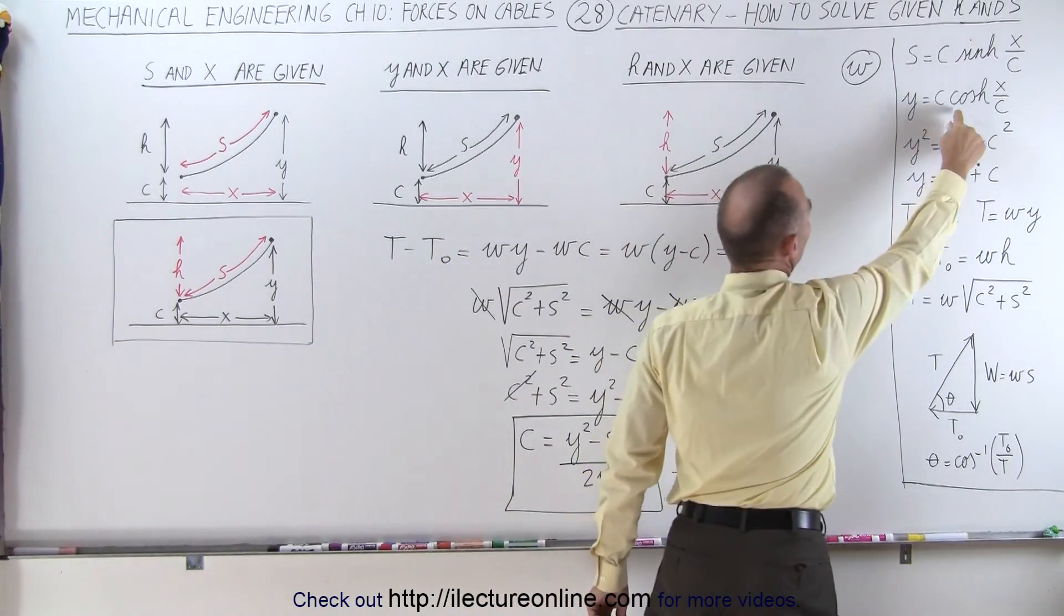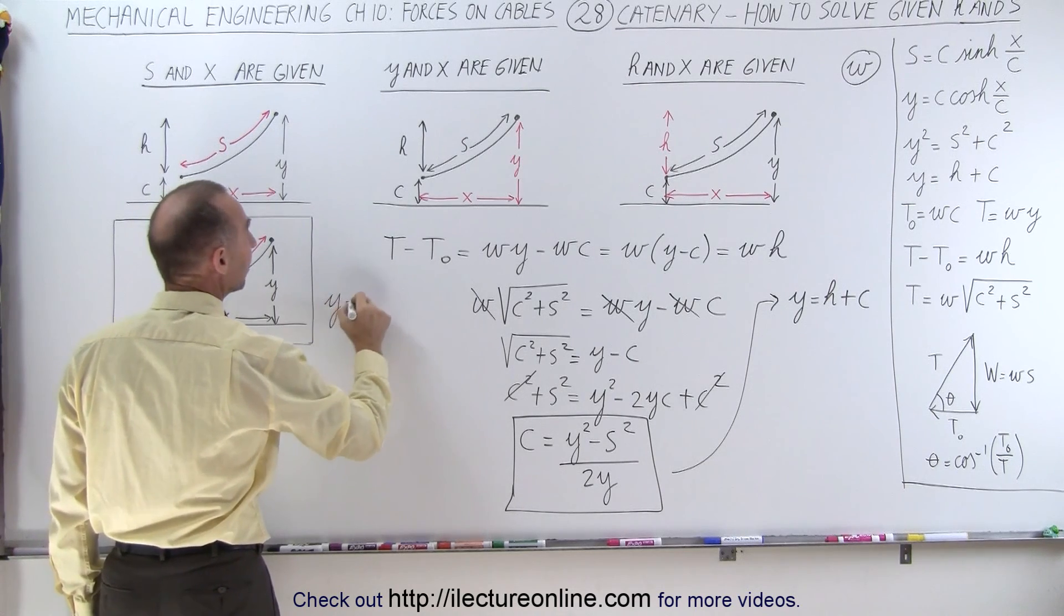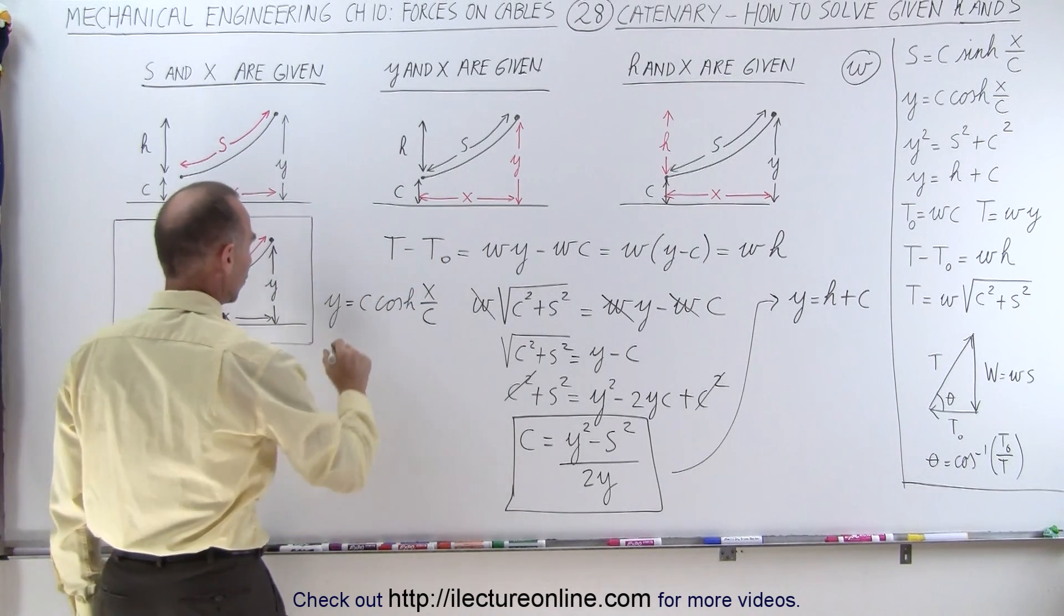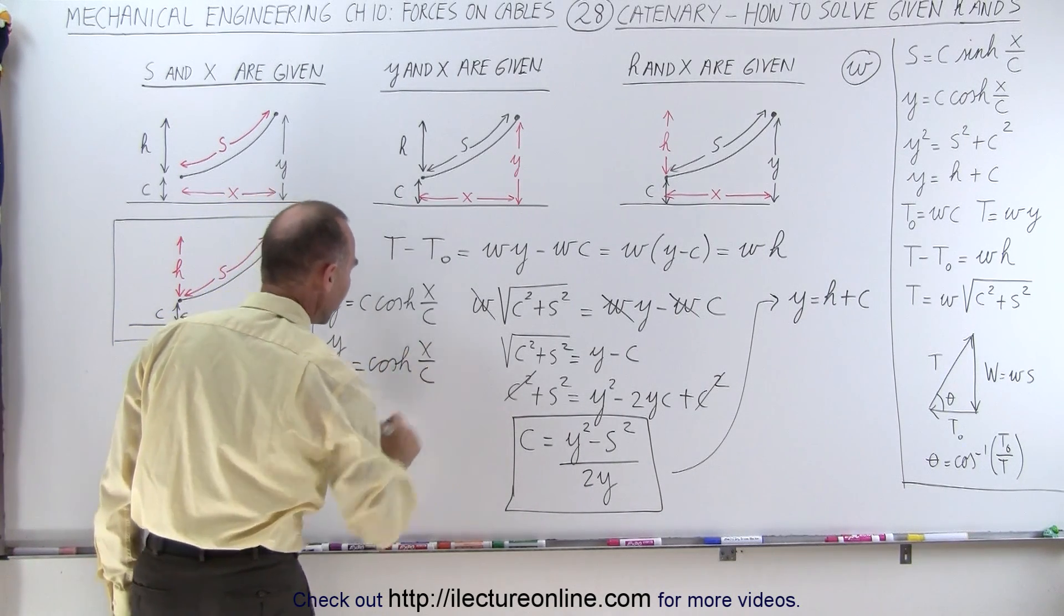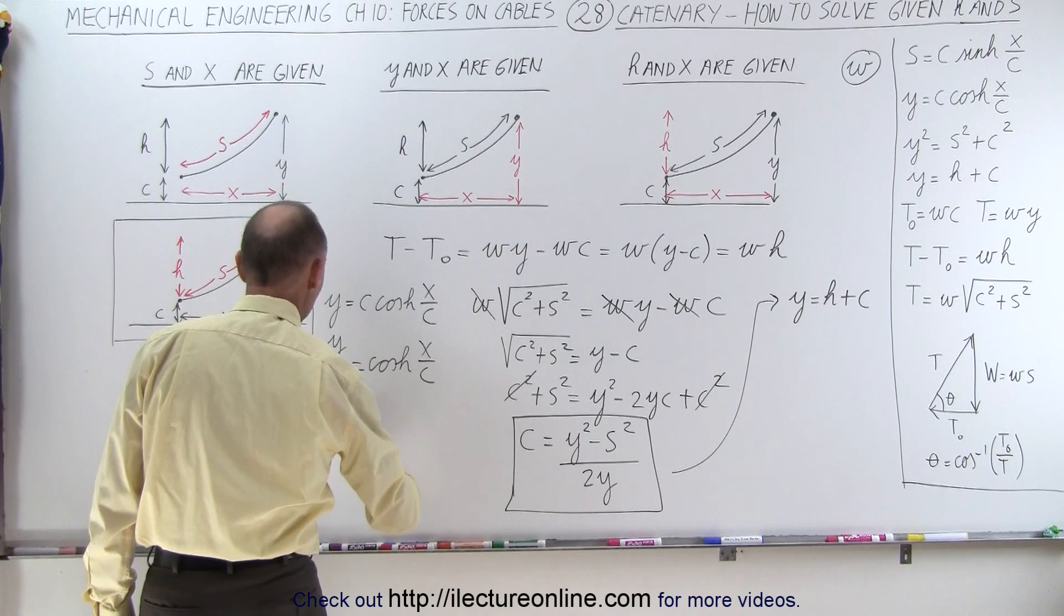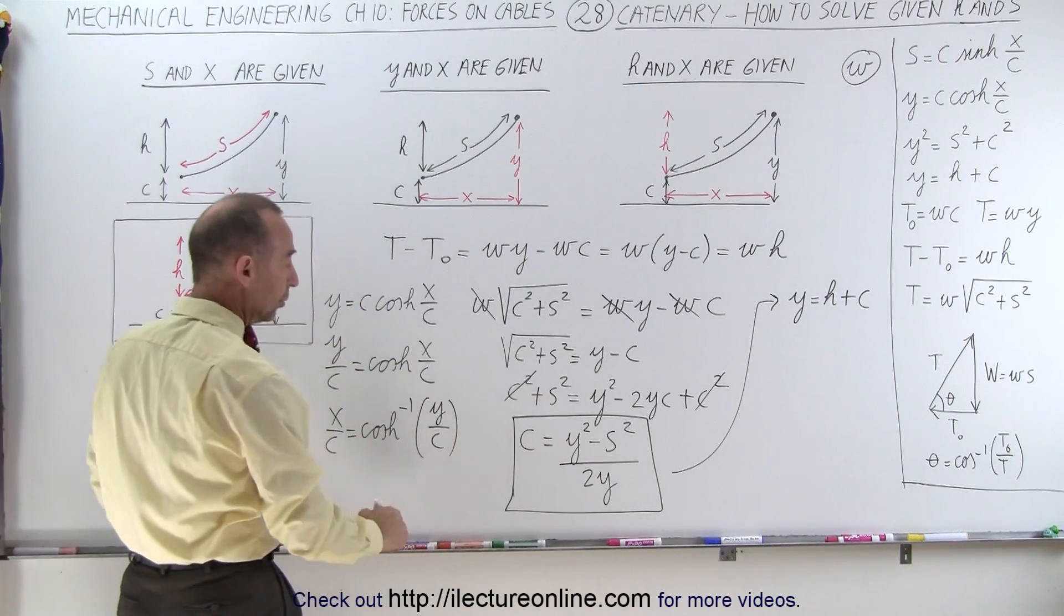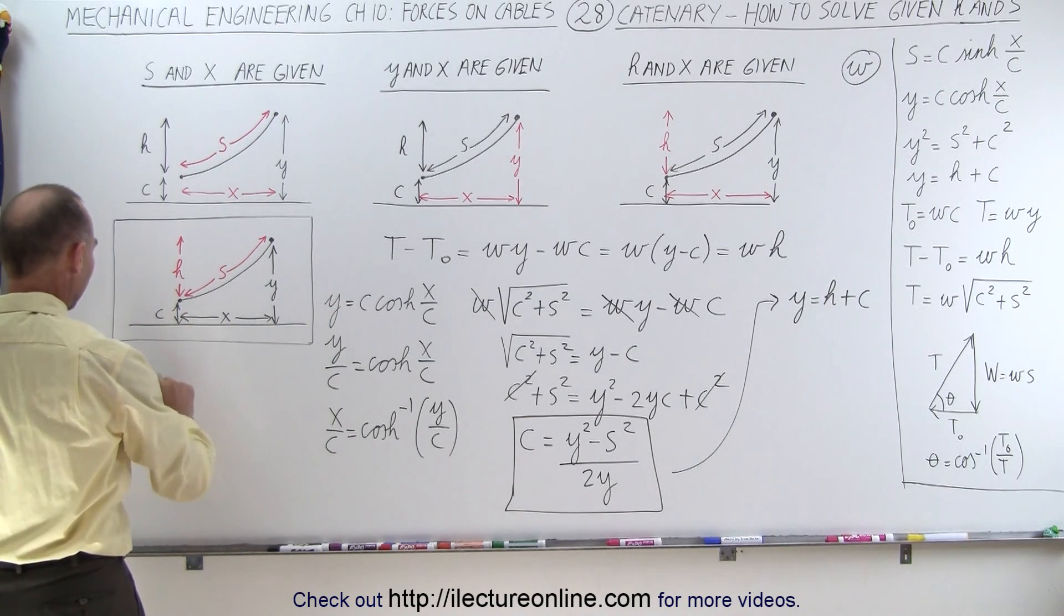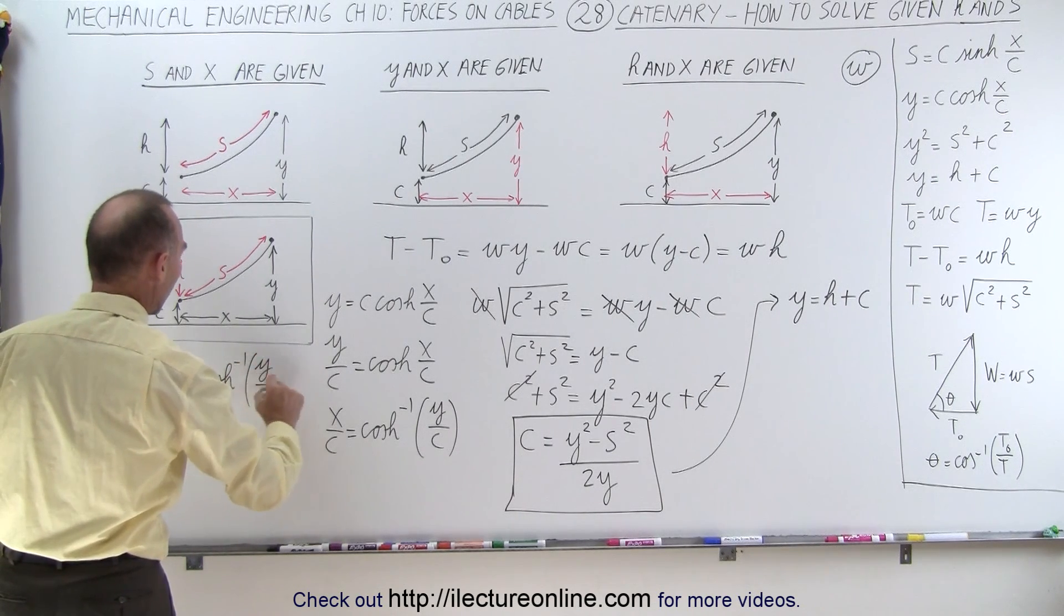Let's go back up here and say, let's start with this equation right here. So we're going to find X. We're going to take Y is equal to C times the hyperbolic cosine of X over C, which means that Y over C is equal to the hyperbolic cosine of X over C. And then if I take the inverse of the hyperbolic cosine, I can say that X over C is equal to the inverse of the hyperbolic cosine of Y over C, which by now I know because I know Y from here and I know C from there. And so finally, I can say that X is equal to C times the inverse of the hyperbolic cosine of the quantity Y over C.